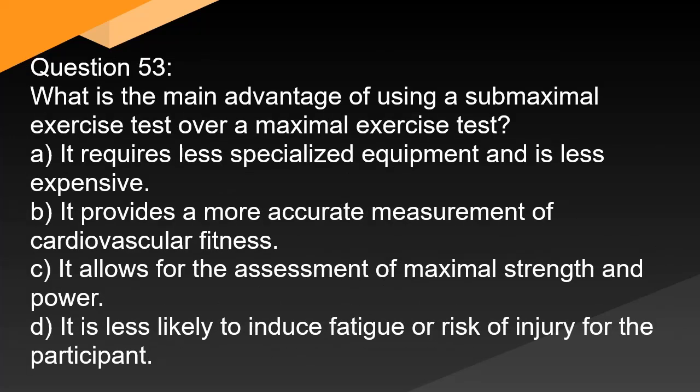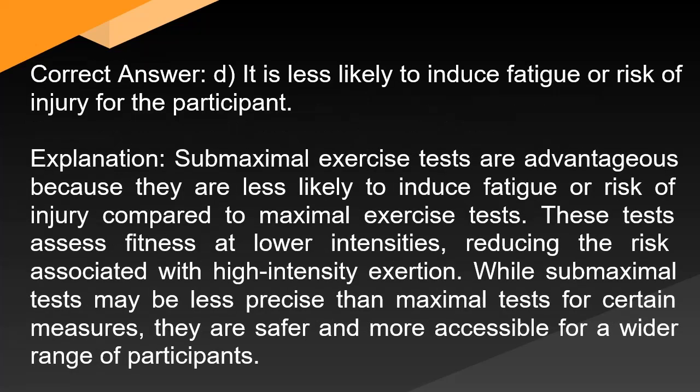Question 53: What is the main advantage of using a submaximal exercise test over a maximal exercise test? A. It requires less specialized equipment and is less expensive. B. It provides a more accurate measurement of cardiovascular fitness. C. It allows for the assessment of maximal strength and power. D. It is less likely to induce fatigue or risk of injury for the participant. Correct answer: D. Submaximal exercise tests are advantageous because they are less likely to induce fatigue or risk of injury compared to maximal exercise tests. These tests assess fitness at lower intensities, reducing the risk associated with high-intensity exertion. While submaximal tests may be less precise than maximal tests for certain measures, they are safer and more accessible for a wider range of participants.